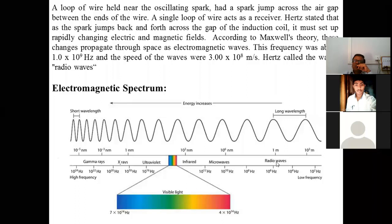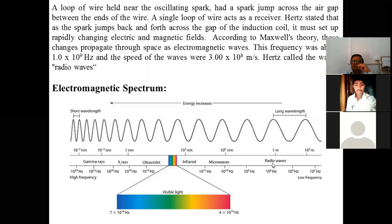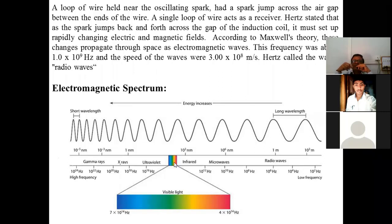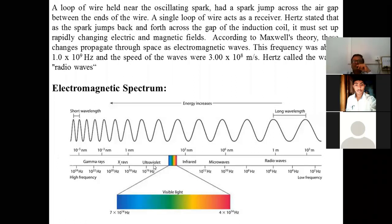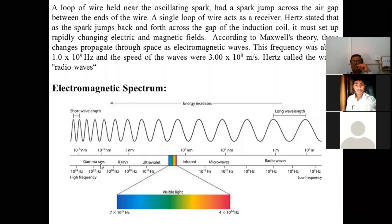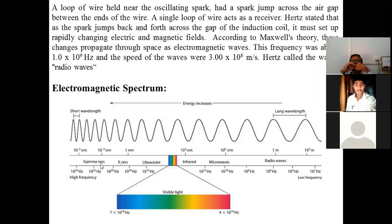As frequency increases, wavelength decreases. The visible light region sits in the middle range. Higher frequency waves include ultraviolet, then X-rays, and finally gamma rays with the highest frequency. The electromagnetic spectrum consists of seven types: 1. Radio waves, 2. Microwaves, 3. Infrared, 4. Visible light, 5. Ultraviolet, 6. X-rays, and 7. Gamma rays.